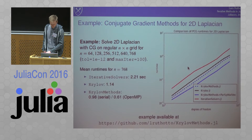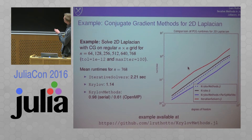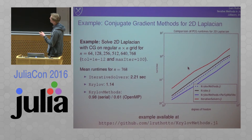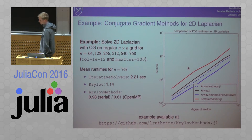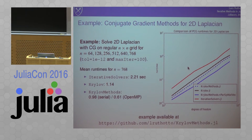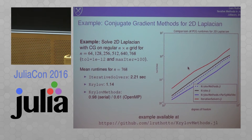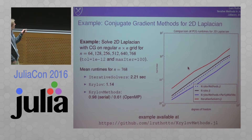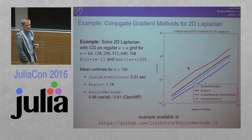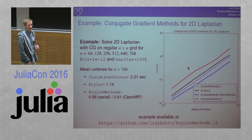I compared three different packages: one is the IterativeSolvers package, which I think is the most widely known; one is the Krylov.jl package; and one is the KrylovMethods.jl package, which I'm basically contributing to mostly. And you can see there is quite a substantial difference in runtime.